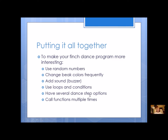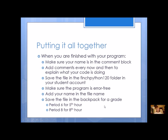You can use loops and maybe even a condition — think about what could be an if statement. You can have several dance step options, more than three, and call your functions multiple times for a long, drawn-out dance. When you're finished, make sure your name is in the comment block. Add comments to your code every now and then, especially if your functions are getting lengthy — that's helpful to anyone reading your code. Also look for duplication: if you're repeating steps, make that a function and do a function call instead. You can have helper functions.